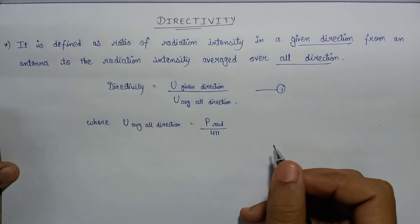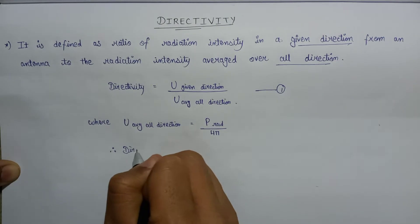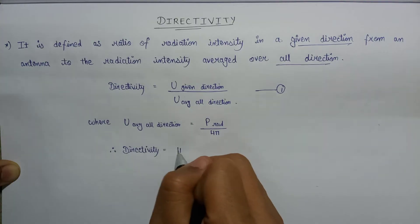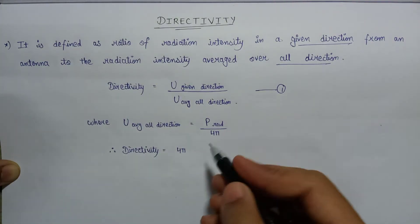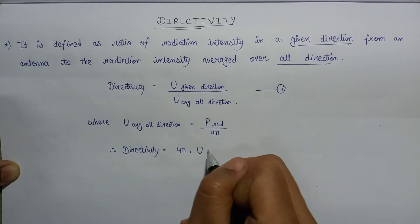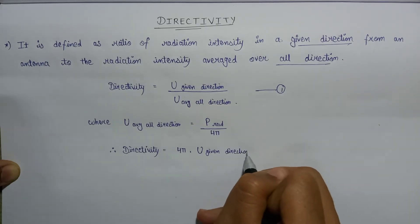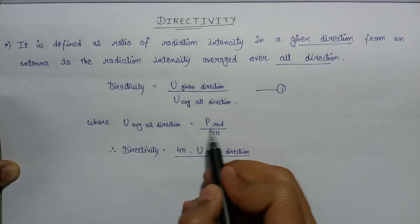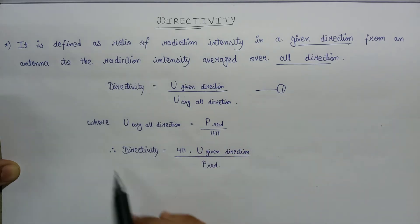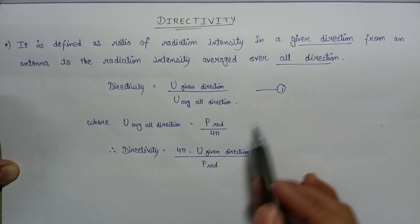The modified formula for directivity is: D = 4π × U (radiation intensity in the given direction) / P_radiated. This is the formula for directivity obtained after substituting the value of U_average into equation number 1.